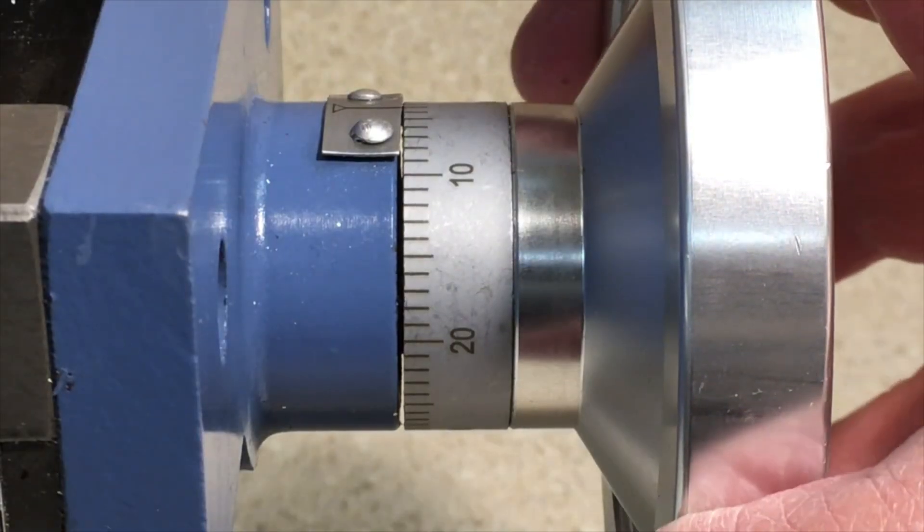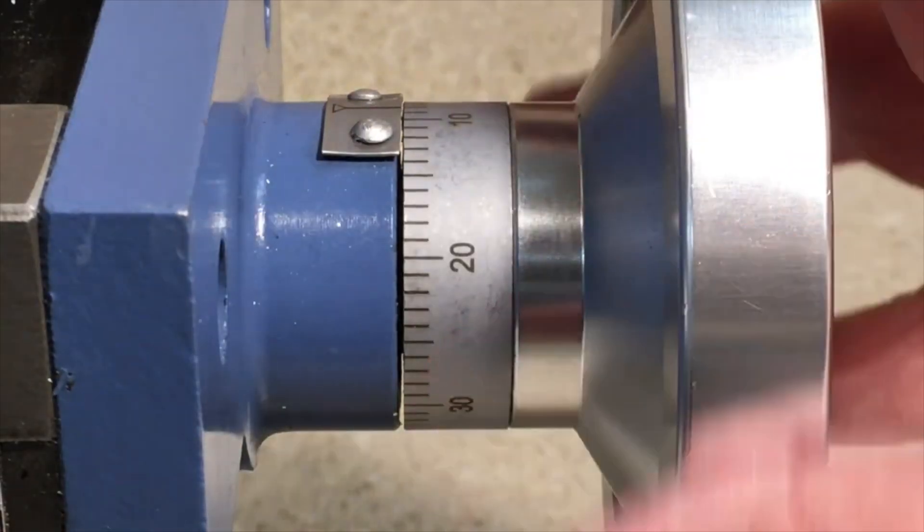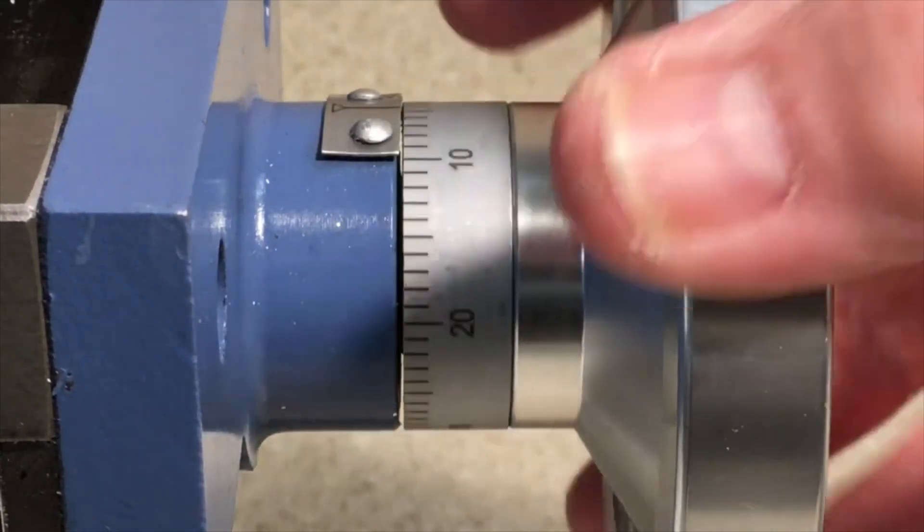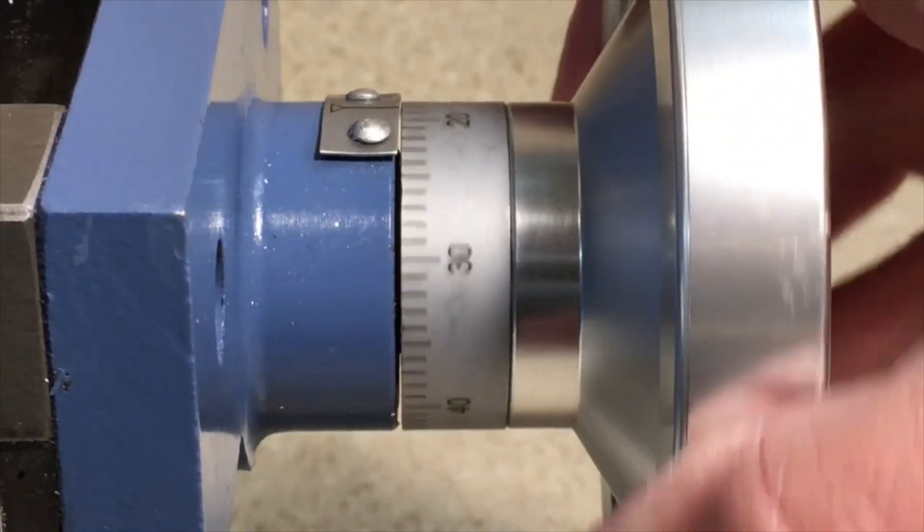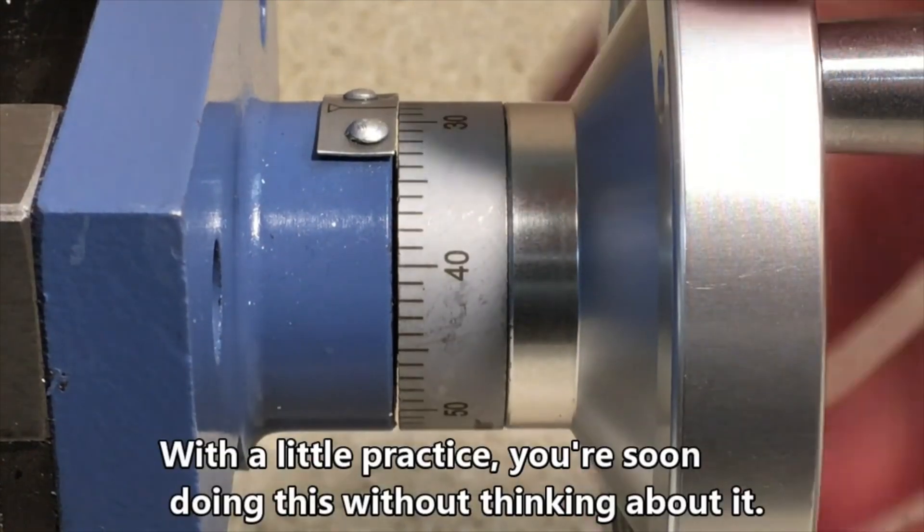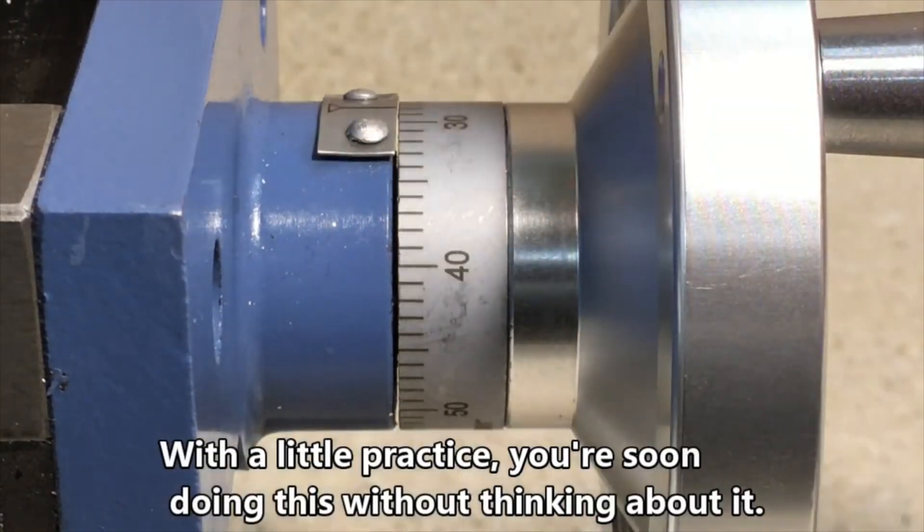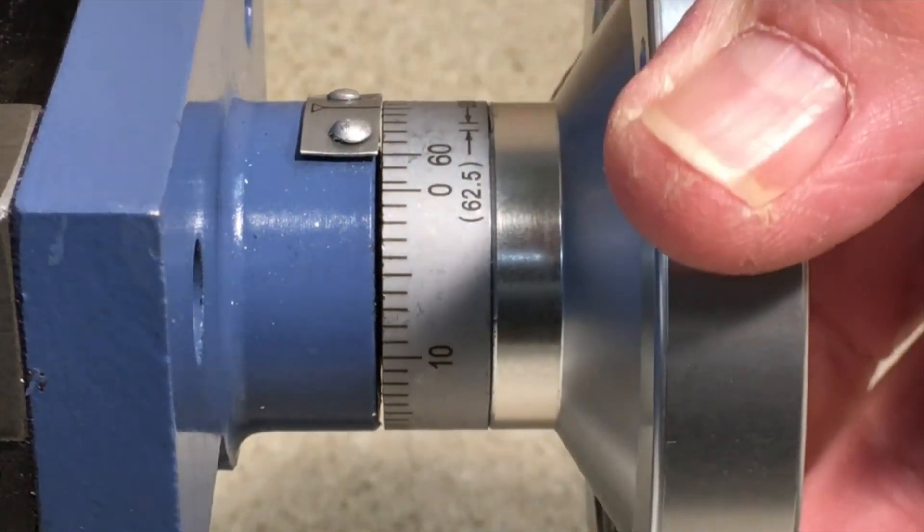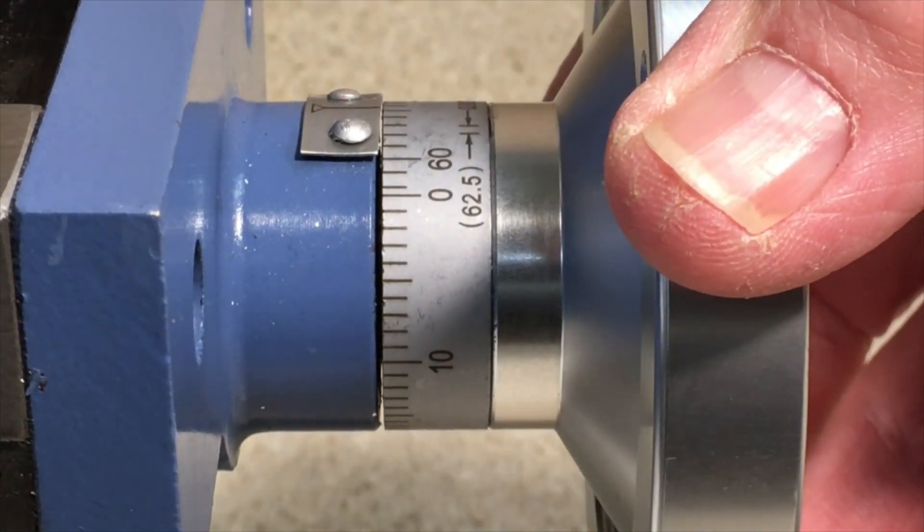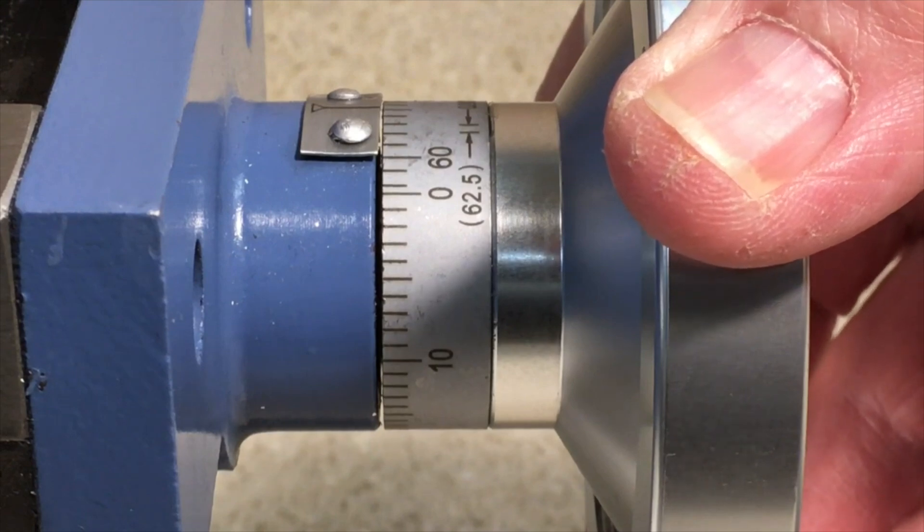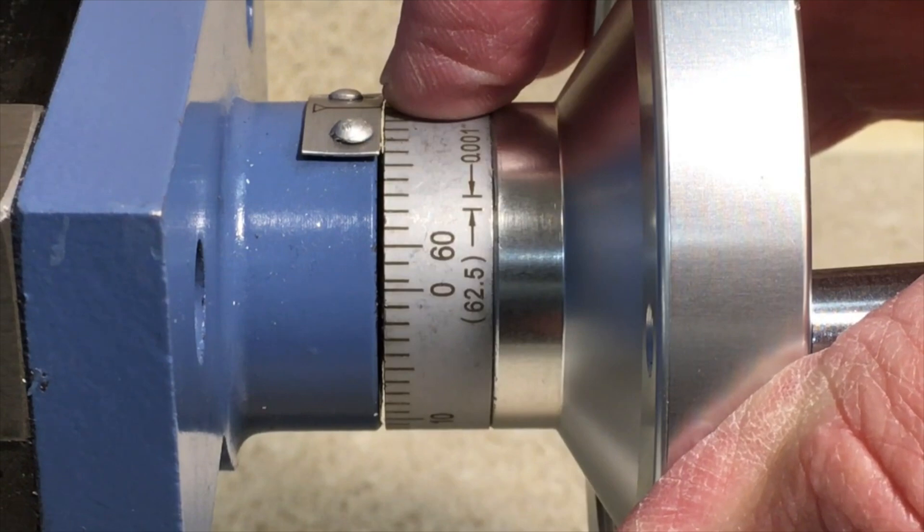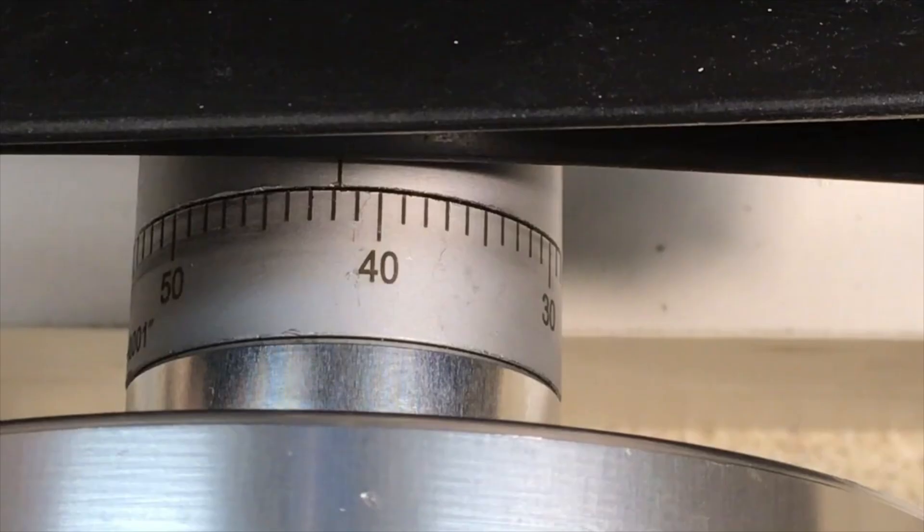So the important takeaway about backlash is that anytime you reverse the direction of movement of the hand wheel you need to go a little extra until you take up that slack, otherwise your reading will not be accurate. Now the good news is that the digital readout eliminates the need to be concerned about that. The digital readout does not change unless the table itself actually moves. That's another reason that digital readouts can really help improve your work in the shop.